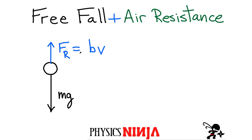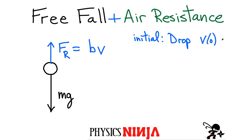Let's have a look at a couple of limits. Initially, if I just drop the object, the velocity at time zero has to be zero. So if I substitute zero into this equation, that means my resistive force, at least initially, has to be zero.